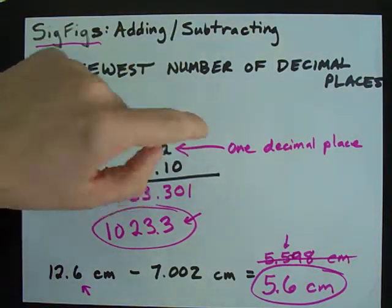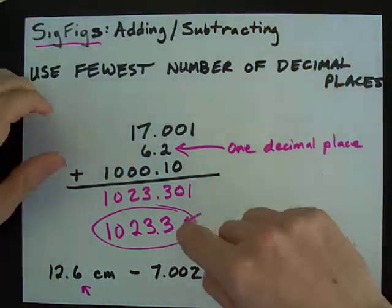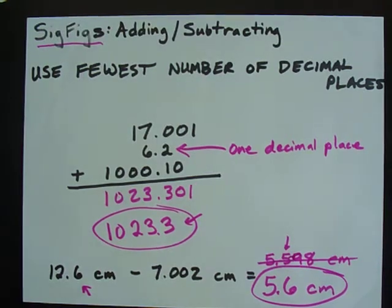Count the number of decimal places in all the numbers you add up and truncate your final answer to have only that number of decimal places. Best of luck.